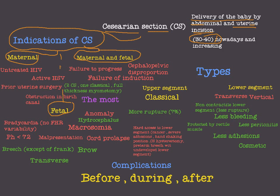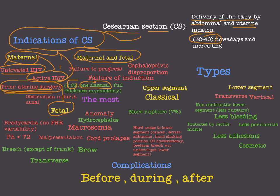When do we do caesarean section for maternal conditions? In untreated HIV, inactive herpes simplex virus, and prior uterine surgery. Actually, the most common reason for caesarean section is prior uterine surgery — like two previous CS. Except if it is a classical CS, one classical CS is enough to indicate another classical CS. Full-thickness myomectomy is also an indication. This is the most important and most common cause.